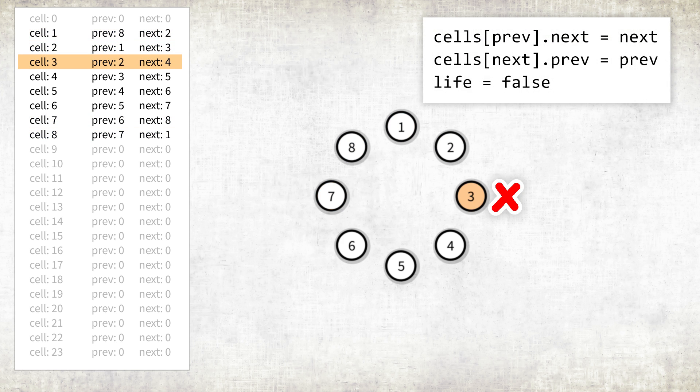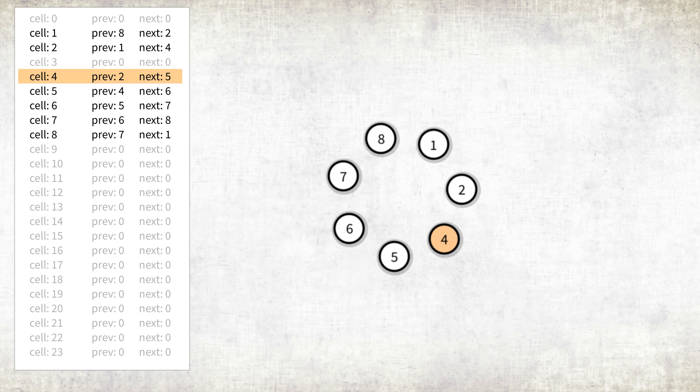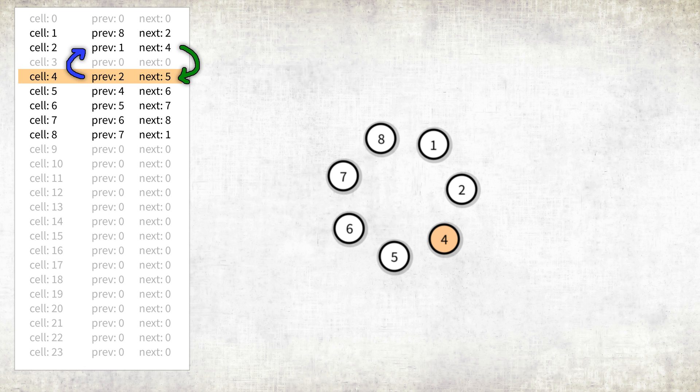When a cell dies, we update the reference field of its next and previous cells. Here you can see how we skip the dead cell.